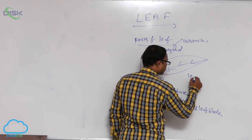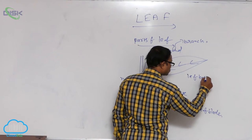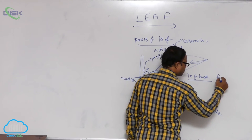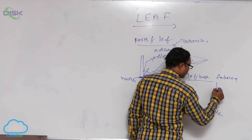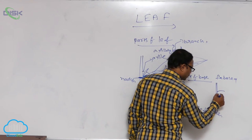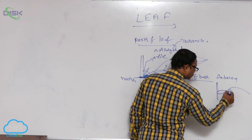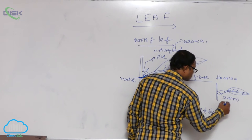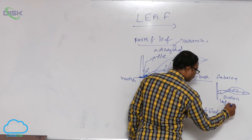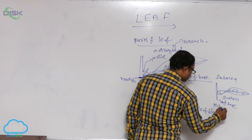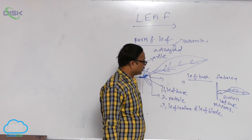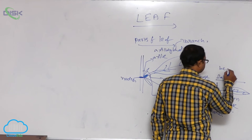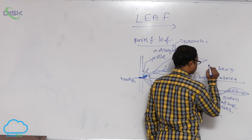Leaf base is of two types. In some plants, for example in the Fabaceae family, the leaf base is swollen. This swollen leaf base is known as the pulvinus. Pulvinus leaf base appears in Fabaceae — for example, take the bean plant.